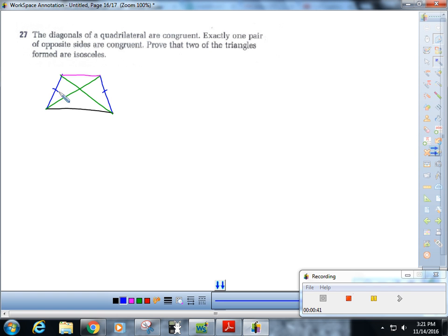The more that you do these, the quicker you'll get at thinking through these properties. And that is absolutely the most difficult part of the upcoming test, is processing this stuff fast enough. Okay, so we're trying to prove that two of the triangles are isosceles.